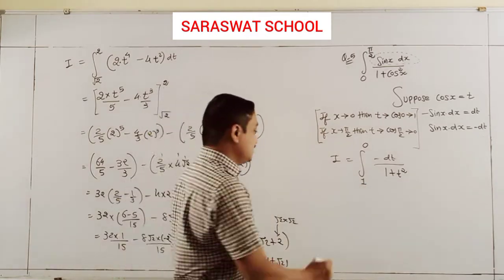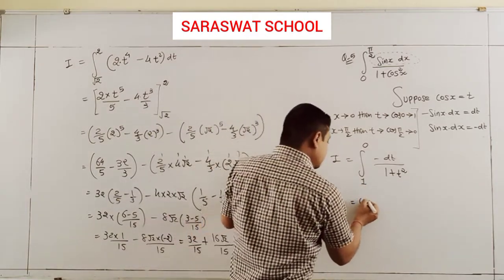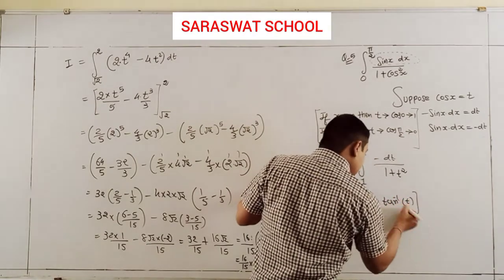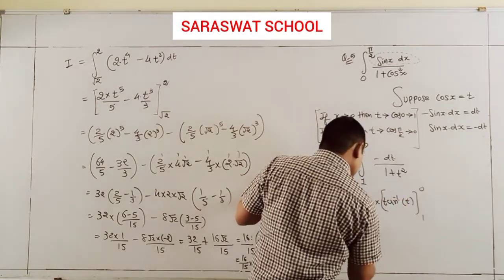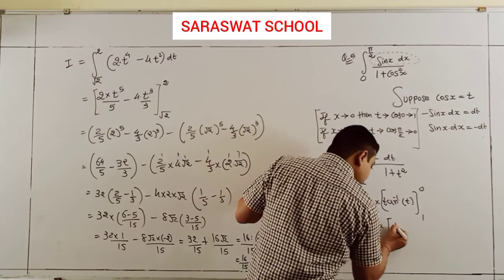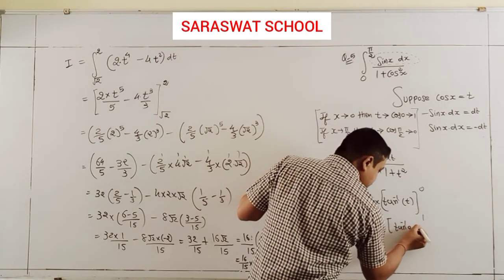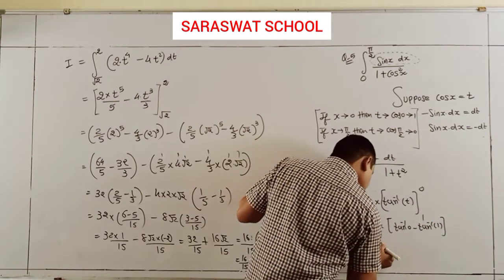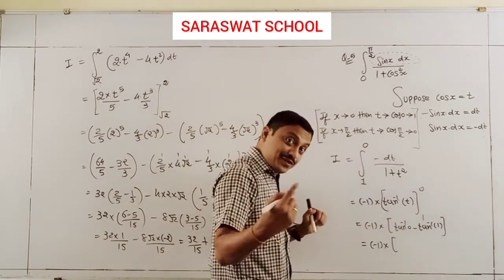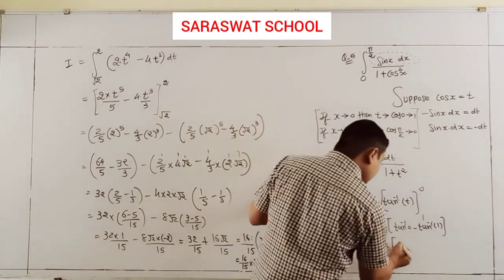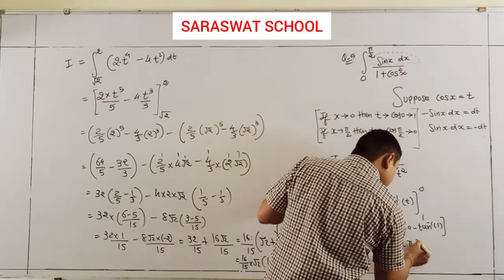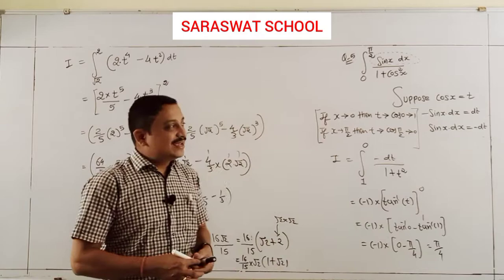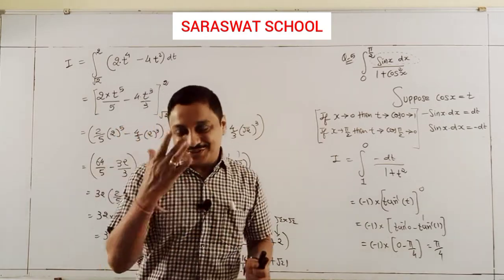The integral becomes -∫₁⁰ dt/(1+t²). Taking minus outside: -[tan⁻¹t] from 1 to 0. Applying limits: -(tan⁻¹0 - tan⁻¹1) = -(0 - π/4) = π/4. Easily this question is done.